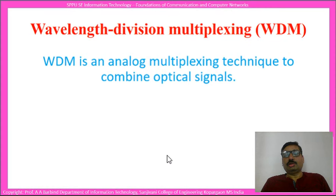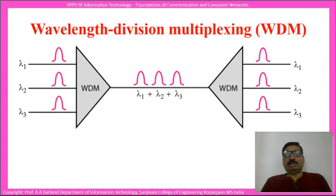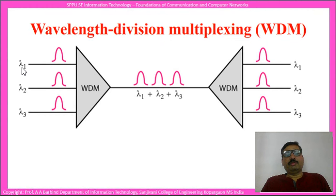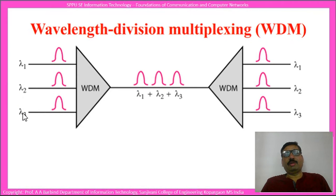WDM is an analog multiplexing technique to combine optical signals. It is very similar to FDM, that is Frequency Division Multiplexing. The only difference is that the signals involved are of very high frequency, having different frequencies. Here you can see three input signals with wavelengths Lambda 1, Lambda 2, and Lambda 3, corresponding to frequencies F1, F2, and F3.